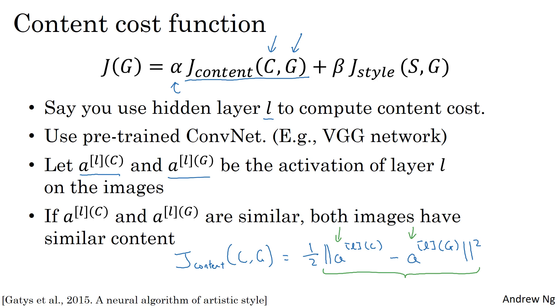When you later perform gradient descent on J(G) to find a value of G so that the overall cost is low, this will incentivize the algorithm to find an image G so that these hidden layer activations are similar to what you got for the content image.